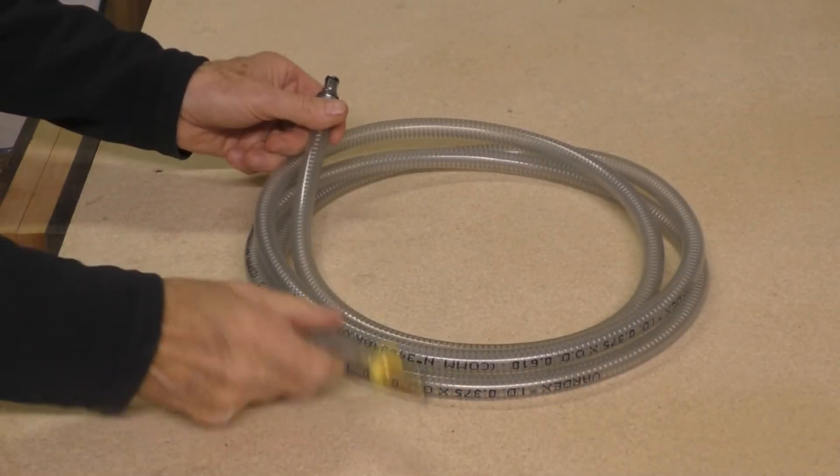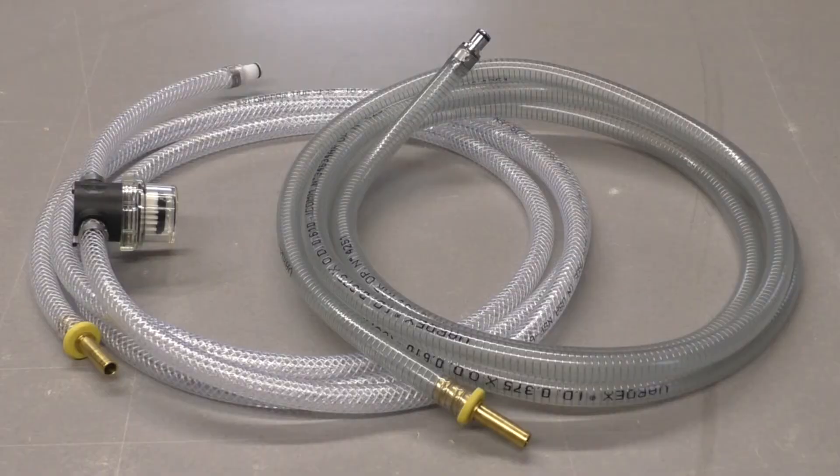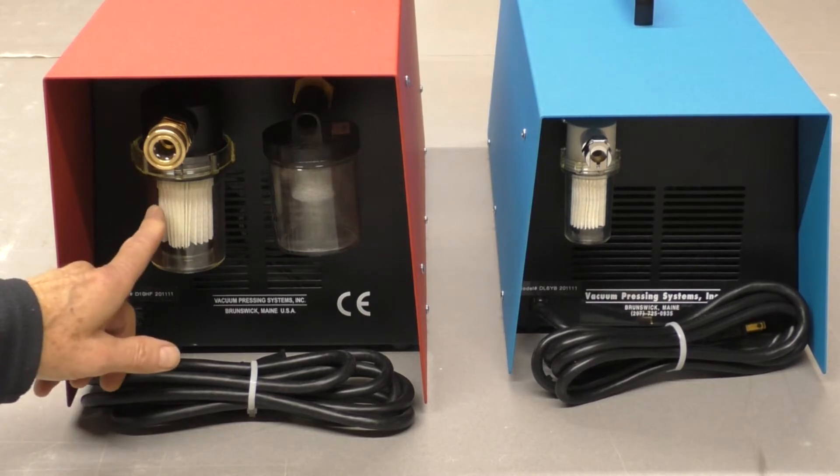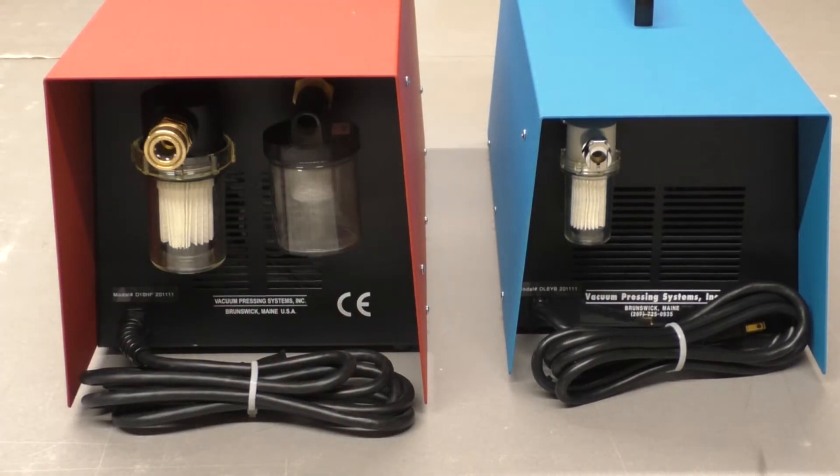Let's take a look at the pump first and by far the most important thing is the hose that connects the pump to the bag. We have two types of hoses. On our larger pumps, the filter jar is on the back of the pump, so the hose does not include it.